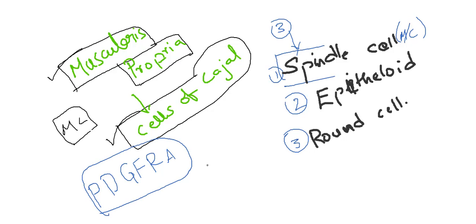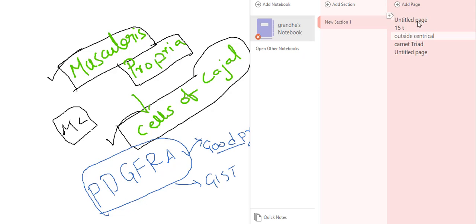There is a platelet-derived growth factor receptor alpha (PDGFRA) in which mutation occurs, and this is the cause of GIST. This mutation has a good prognosis. The patients with this mutation have good prognosis.